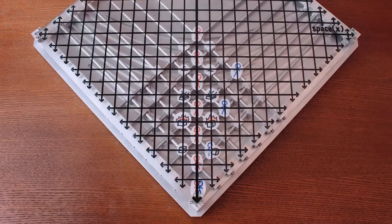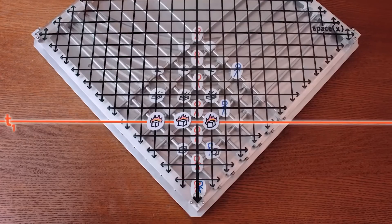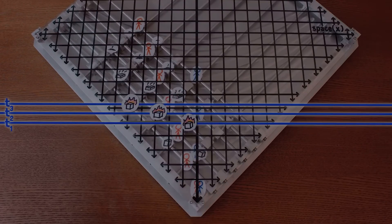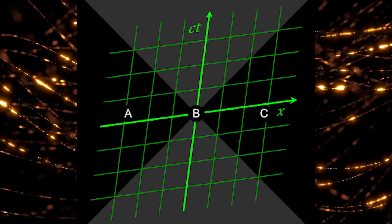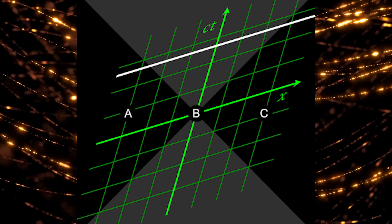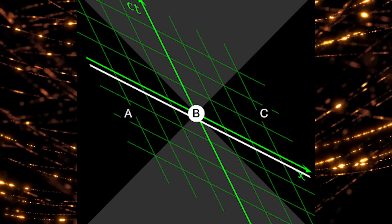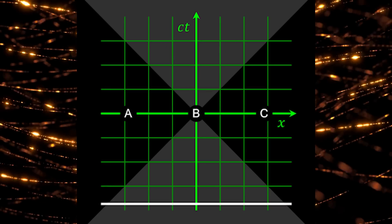Objectively simultaneous events in one frame of reference will not be simultaneous in another. It sounds completely absurd, but it has been verified by experiments, a scientific fact. Moreover, for different frames of reference, events can not only occur non-simultaneously, but even in different sequences. Doesn't this challenge our understanding of the concept of cause and effect?